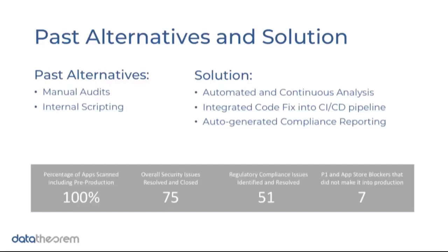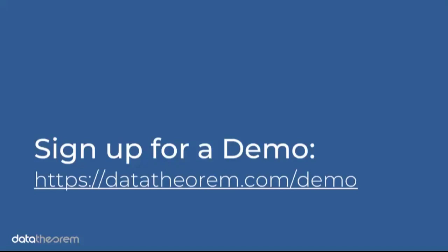As a result, they're now able to scan all of their apps in pre-production before they ever reach a production release. Over the last 90 days they've been able to close out over 75 security issues, 51 identified compliance and regulatory issues, and most importantly, ensure that top-priority data vulnerabilities that remote hackers can exploit — as well as app store blockers — did not make it to a production release. That's what automation was able to do for them in a 90-day period across multiple applications and product teams.